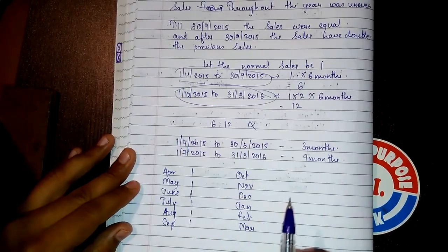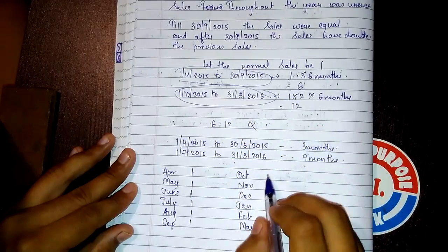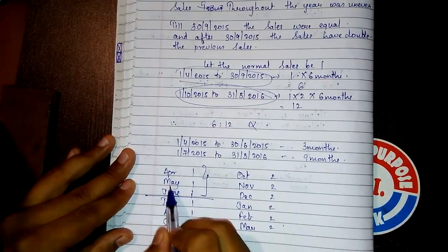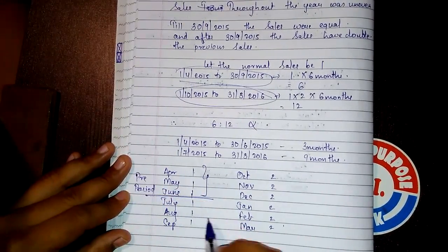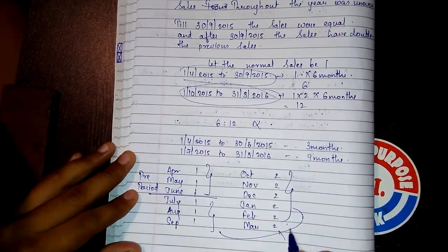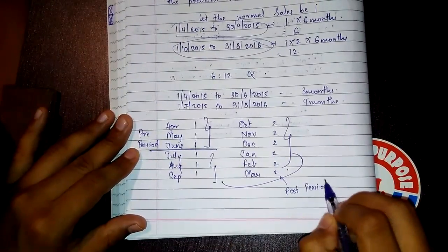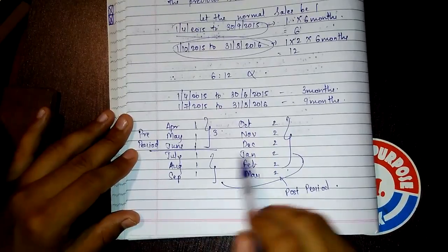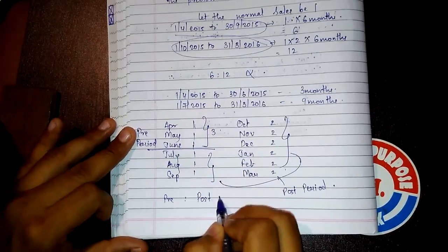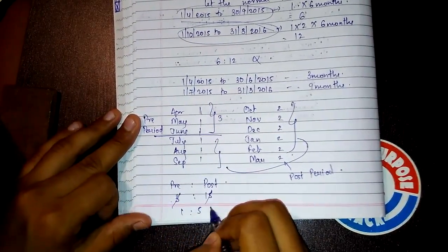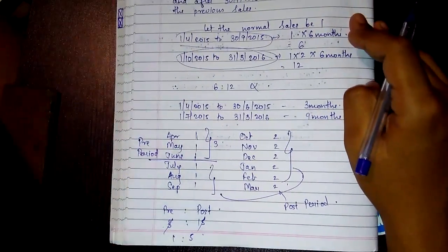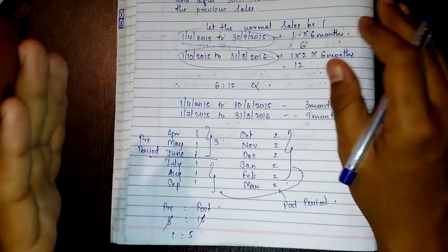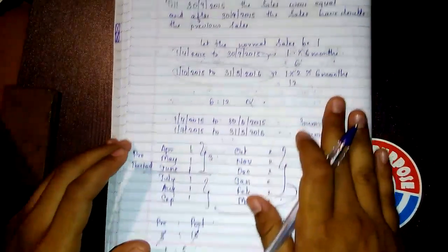From 1-10-2015 to 31-3-2016 sales were 2 rupees each month. Our pre-incorporation period is April to June — that gives a pre-period total of 3. The post period total is calculated as the remaining months: 3 months at 1 rupee plus 6 months at 2 rupees equals 3 plus 12 = 15. So the sales ratio of pre to post is 3:15, which simplifies to 1:5.